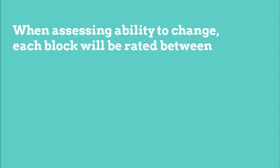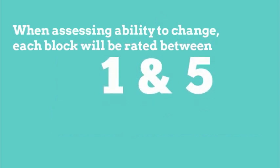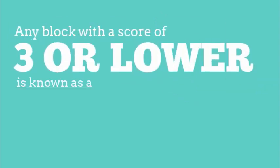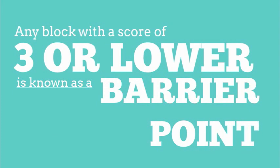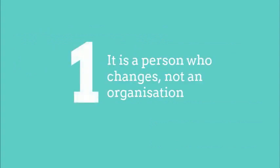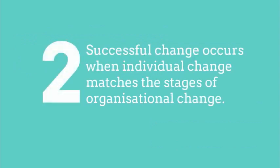When assessing ability to change, each block will be rated between 1 and 5. Any block with a score of 3 or lower is known as a barrier point. The ADCAR change model is founded on two basic ideas. One: it is a person who changes, not an organisation. Two: successful change occurs when individual change matches the stages of organisational change.